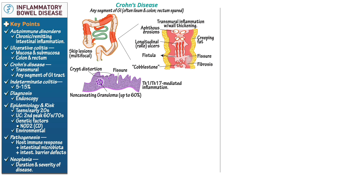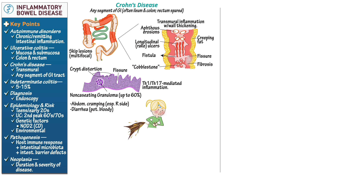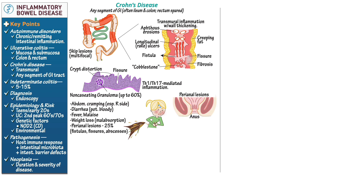Write that Crohn's disease is characterized by Th1 and Th17 cell-mediated inflammation. Show that patients with Crohn's disease commonly complain of abdominal cramping — often on the right side where the ileum meets the large intestine — diarrhea, potentially bloody diarrhea, fever and malaise, weight loss due to malabsorption, and, in up to 25% of patients, perianal lesions. Show skin tags near the anus and fistulas that form in the anal canal and open to the perianal region.